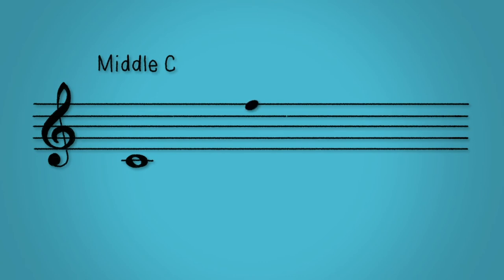Notes can either sit on a line or in a space. The vertical position of the note defines the pitch. The higher up the stave, the higher the pitch. The lower it goes, the lower the pitch.